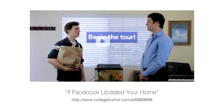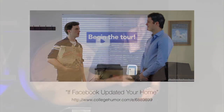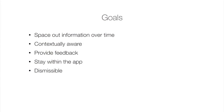Facebook has been made fun of for its tutorial style — College Humor made fun of us for it — and we're aware of this and trying to make it better. Some goals we had for the tutorial we wanted to build for Paper: we wanted to space out information over time so it'd be easier to retain. If you have a fire hose of information up front, people won't remember it because they don't yet know what they need to know to use the app. It'll just pass right through, and user studies have confirmed this.